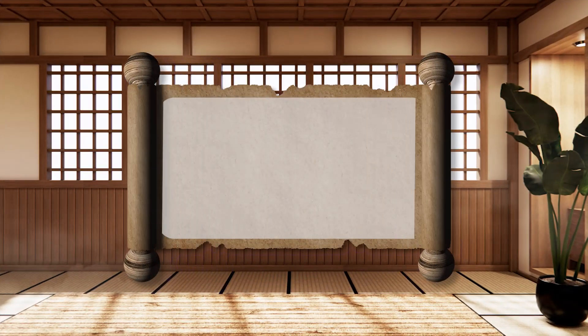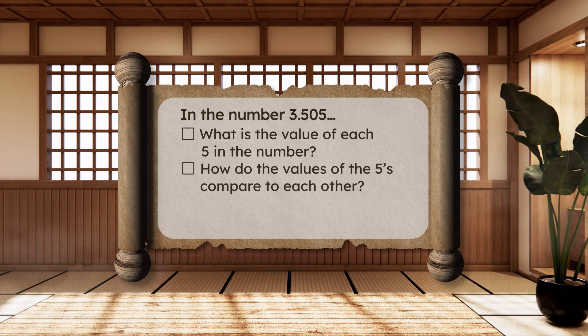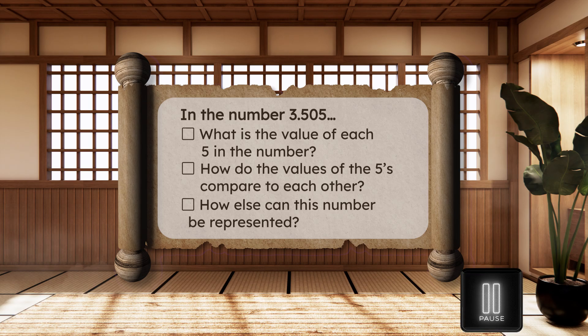Your challenge still awaits. Complete it, and the decimal place value badge is yours. Good luck, Math Masters! In the number three and five hundred five thousandths, what is the value of each five in the number? How do the values of the fives compare to each other? How else can this number be represented? Pause here to complete the challenge in your guided notes. Use everything you've learned today to show your mastery.